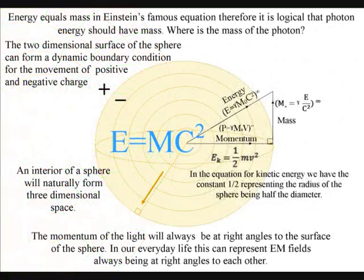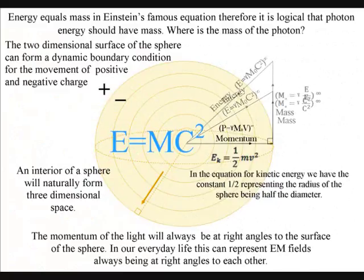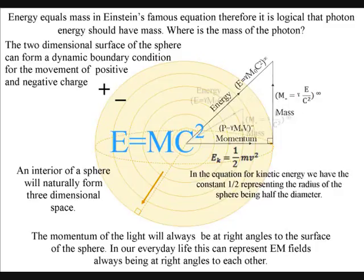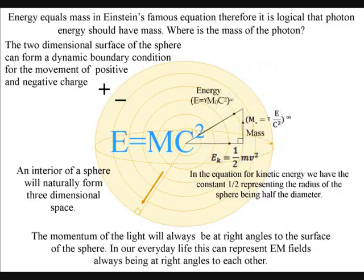In this simple diagram we can see if energy increases, mass will increase. And if you decrease the momentum to zero, representing a stationary object, you end up with Einstein's famous equation.